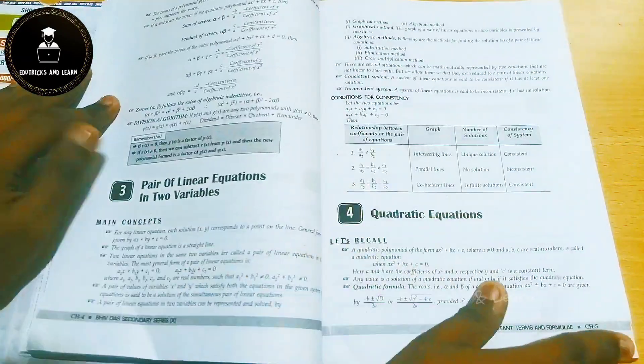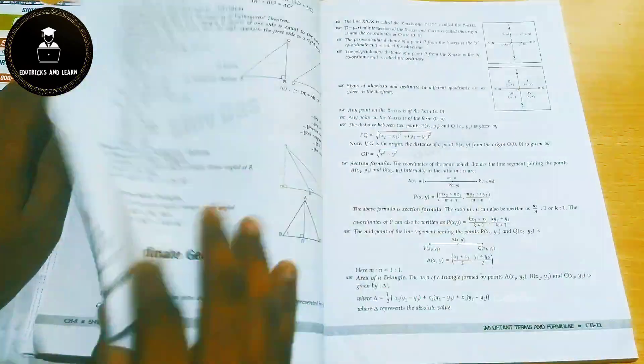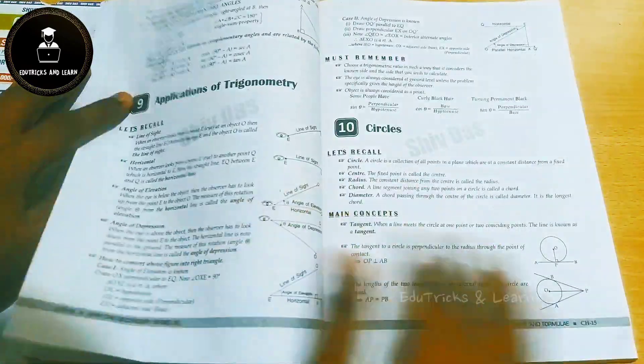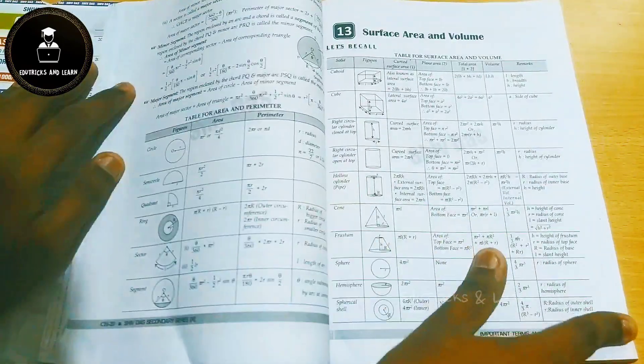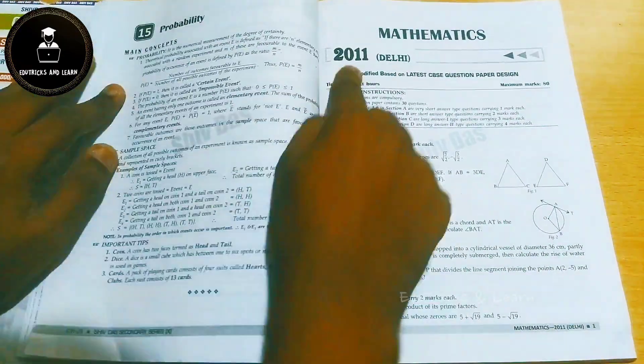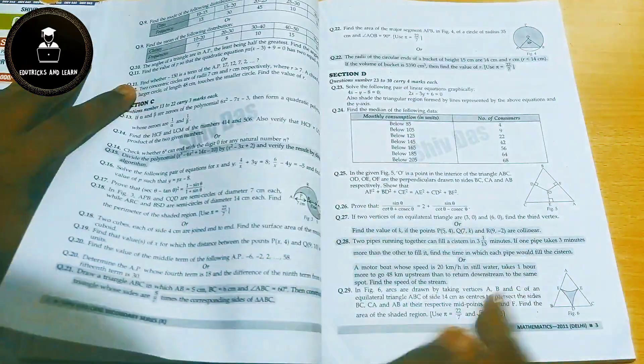In this, they are providing notes, formulas, and the important things we want to remember. They are given chapter-wise for all the chapters. And then they have started with the Mathematics previous year papers from 2011.